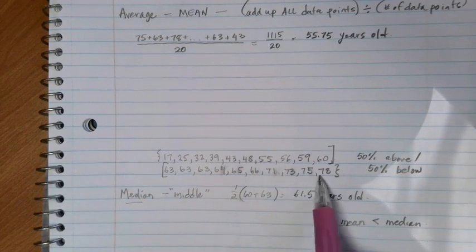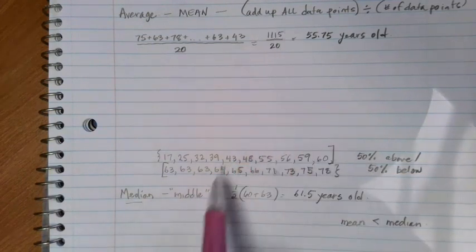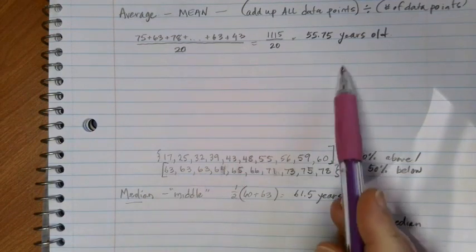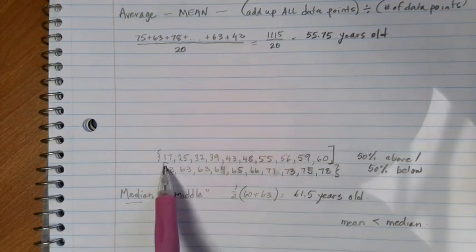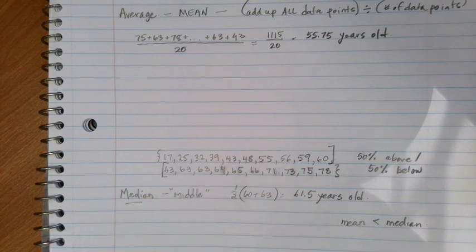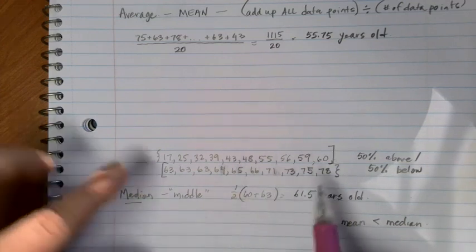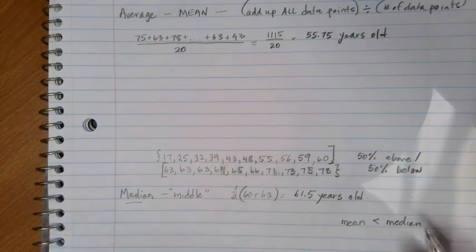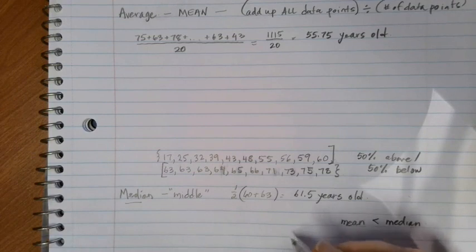We can see that here when we calculated the mean. The reason that that ended up lower is because we had a couple of really young people here that won the Nobel Peace Prize earlier. We actually do have a term for what this is when we look at values along these lines. What we're looking at is something called skew.